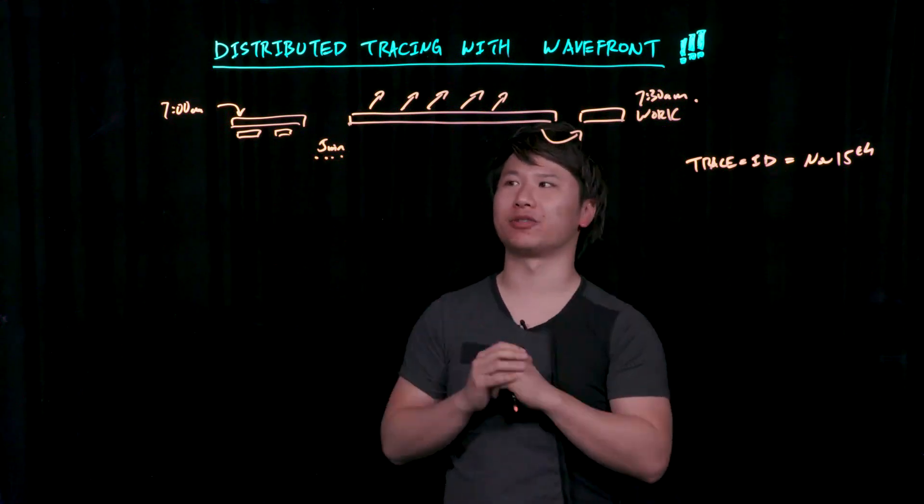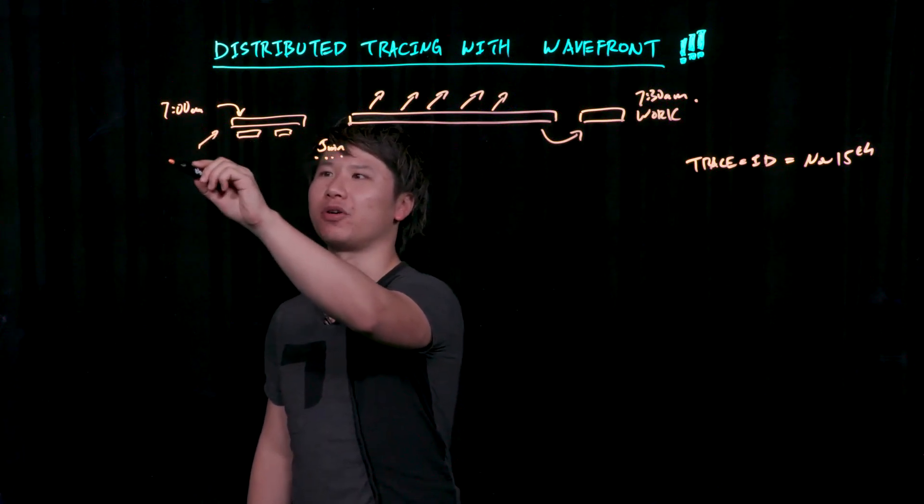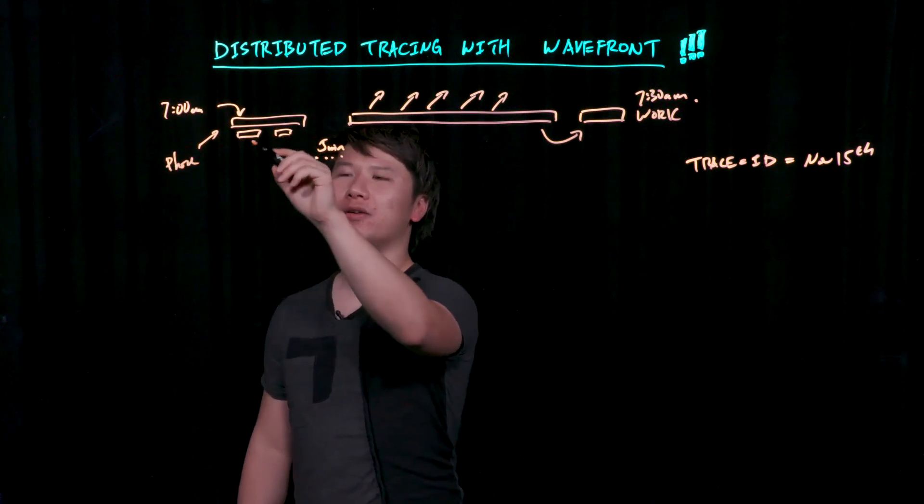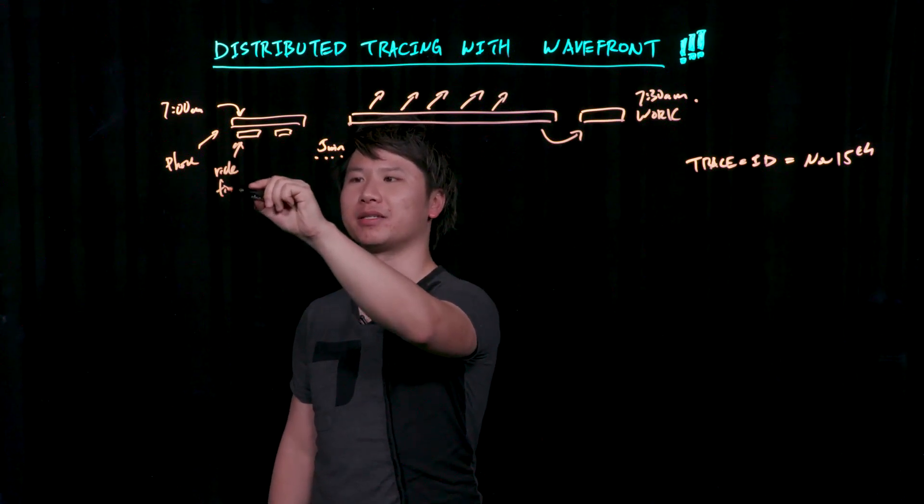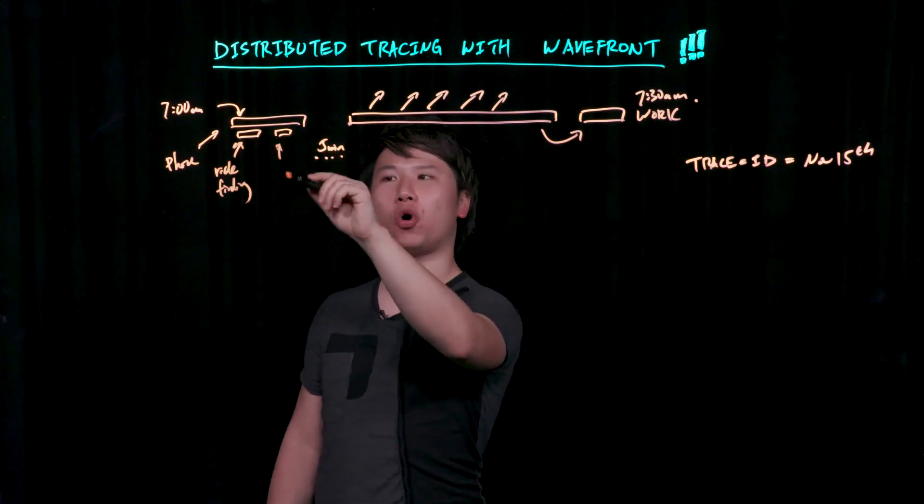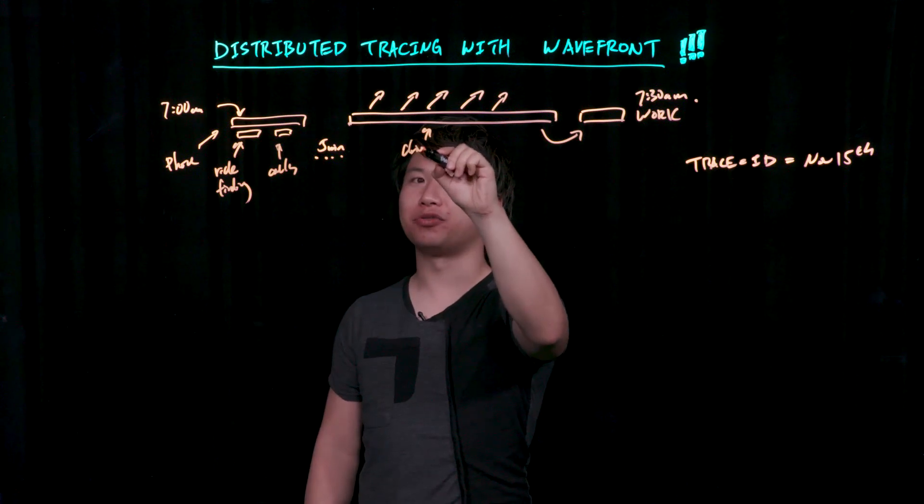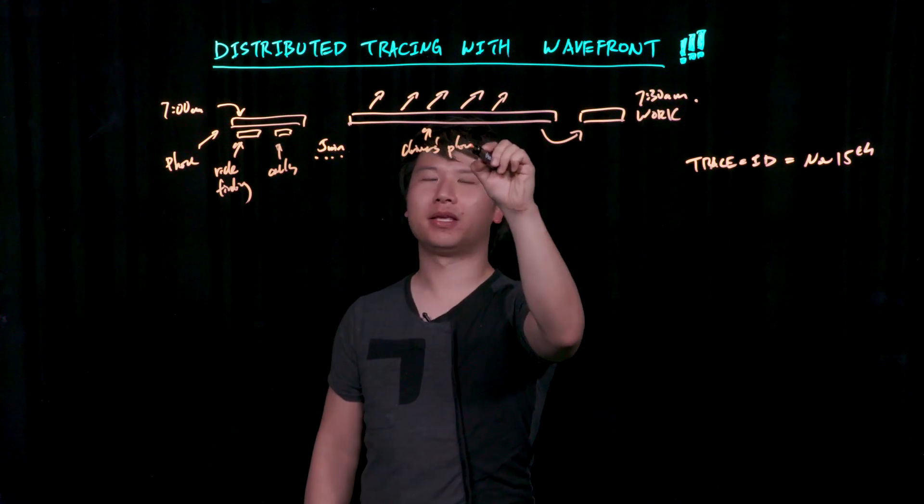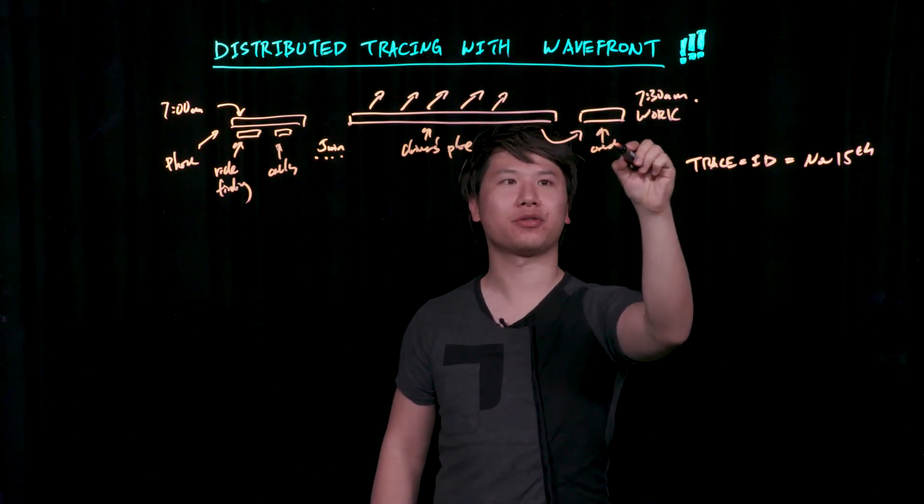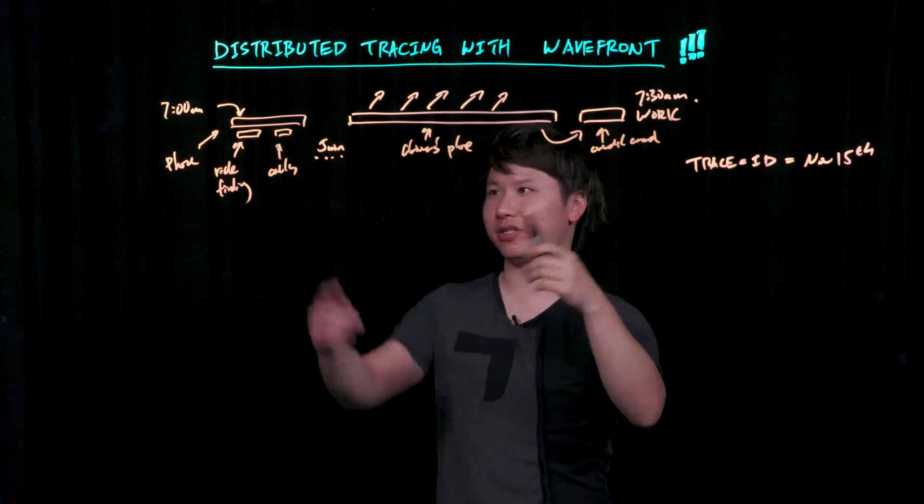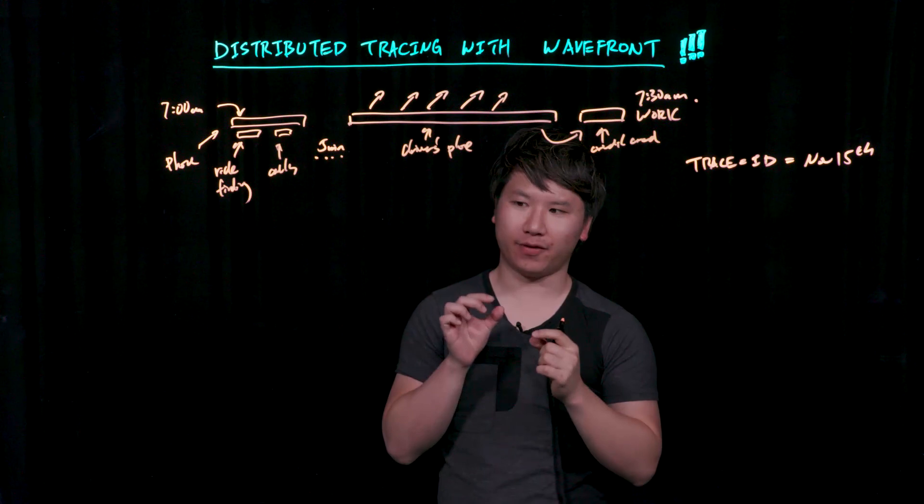You can see there are many pieces already in this distributed trace. Something is happening on your phone. There's something happening in some sort of ride-finding system. There's something that calls the driver. There's another app involved—the driver's phone.